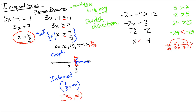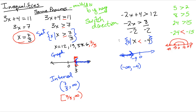Applying that rule: dividing -2x > 8 by -2 gives x < -4 (direction switched). Graphing this: mark 0 and -4; we want numbers less than -4, so the arrow goes left with an open circle at -4. In set notation, that's the set of all x < -4. In interval notation, it goes from negative infinity up to (but not including) -4.